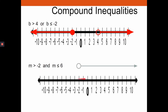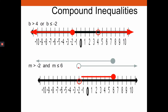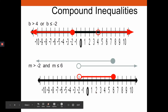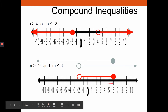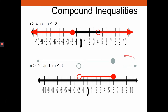For the AND statement — m greater than negative two and m less than or equal to six — draw arrows above the number line first to find the overlap. Open circle at negative two, arrow right; closed circle at six, arrow left. The double bars show where both conditions are met. Shade only in between negative two and six — numbers like negative one, zero, one through six are included, but nothing outside that region.